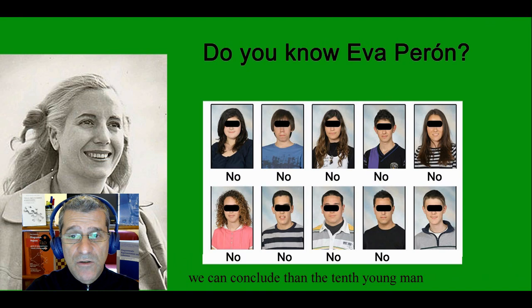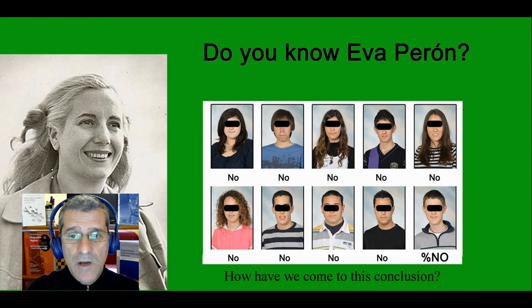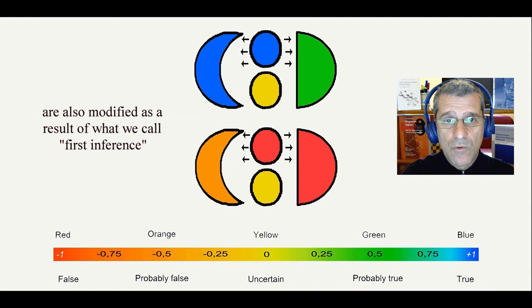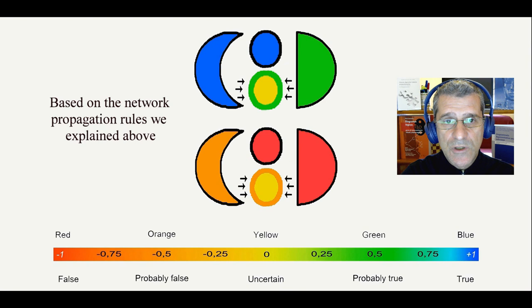When we give the object's nodes a known zero value, the values of the OR nodes and the values of the AND nodes are also modified as a result of what we call first inference. Based on the network propagation rules we explained above, we can make a second inference to update the value of all object nodes.